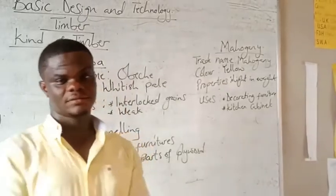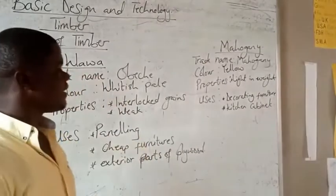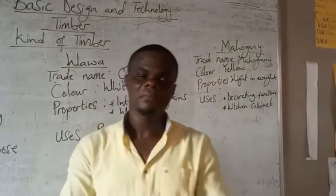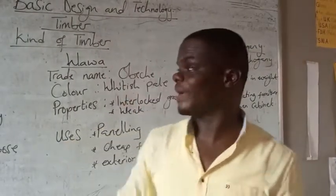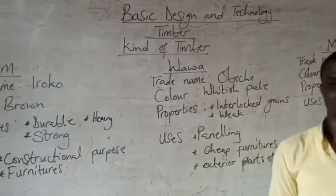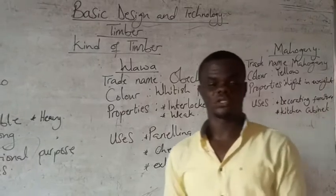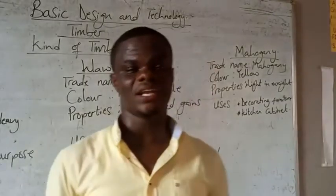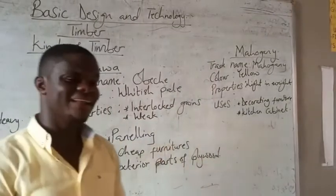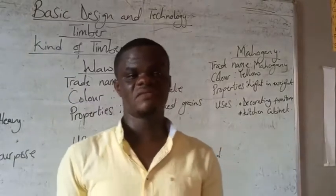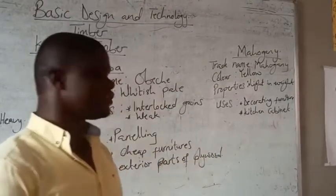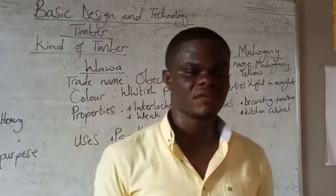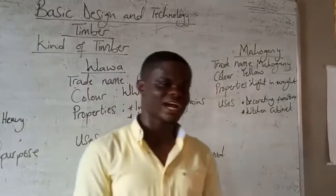Now we move to the last one: mahogani. Mahogani's trade name is still mahogani — the name doesn't change, unlike udum which has the trade name iroko, and guawa which has the trade name ubeche. Mahogani is yellowish in color and very light in weight. It is used for making decorative furniture and also for making kitchen cabinets.